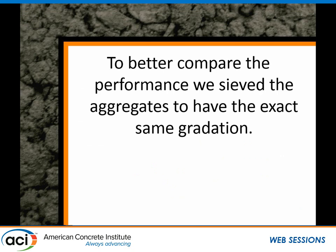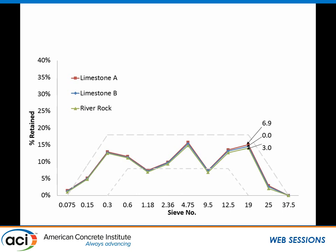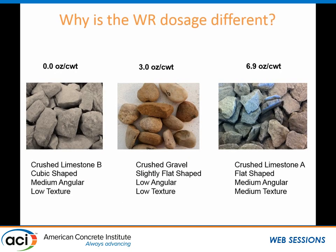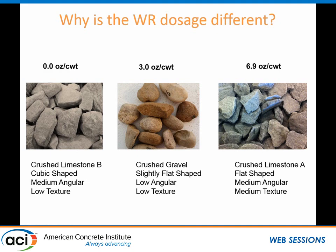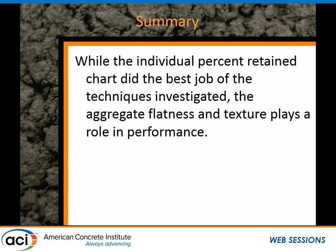To look at this even more, we took those three aggregates and sieved them so the gradation was exactly the same. You'd think they might perform the same — they don't. You start to look at why. You have to look at the aggregates, you have to look at the shape. If we line these up from the lowest amount of water reducer required to pass the test to the highest, they match directly with the flatness and elongation of the particle. Particles that were cubic in shape didn't require any. Particles that were flat and elongated required much more. So grading isn't everything, but it's a great step to get you in the right ballpark. Flatness is really important.